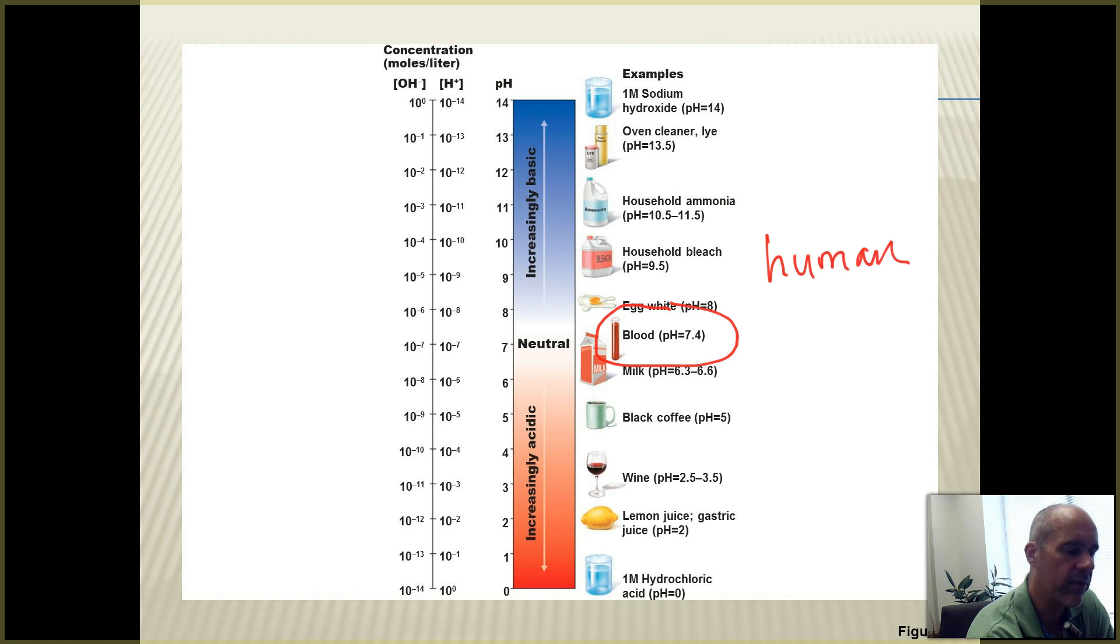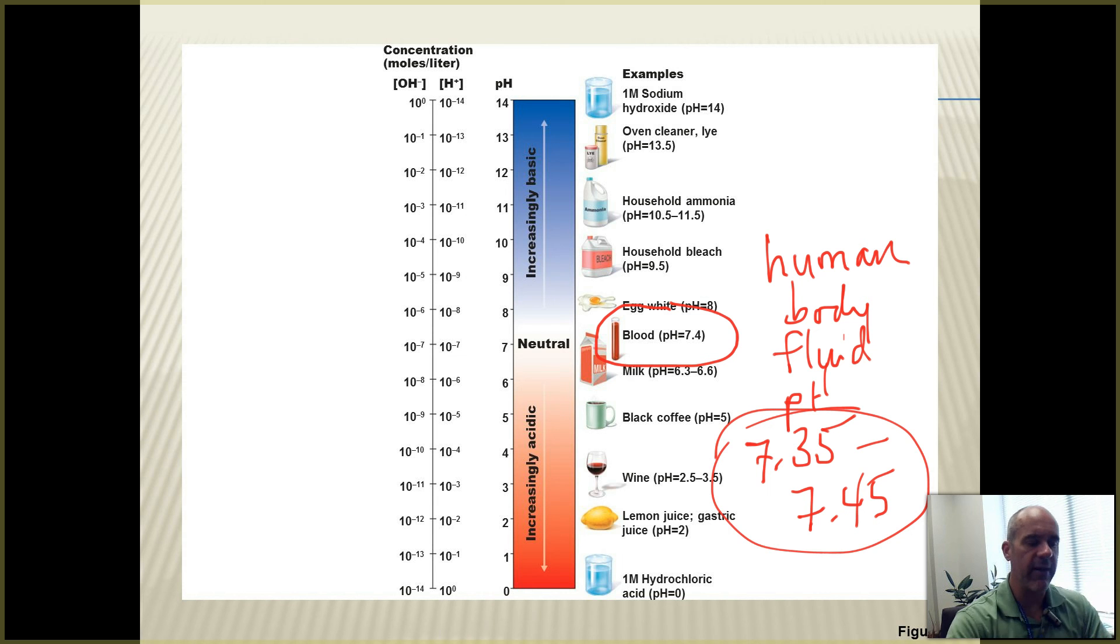Human body fluid pH, you guys should know this forever. The normal homeostatic range is 7.35 to 7.45. That is the normal homeostatic range for human body fluid pH.